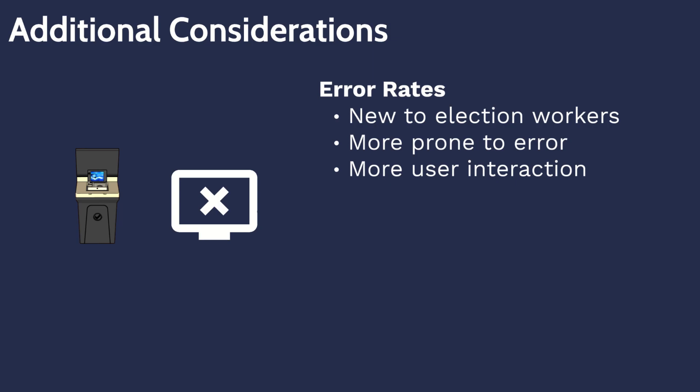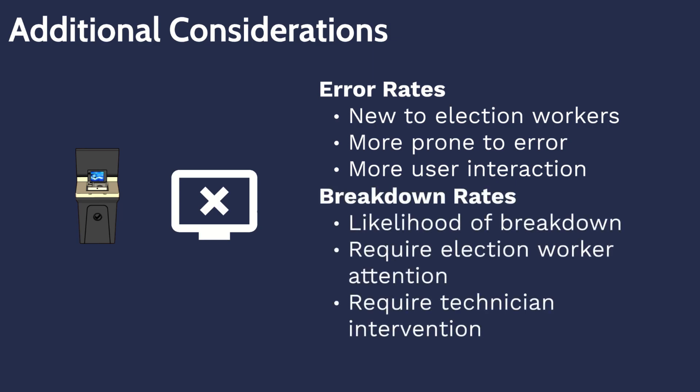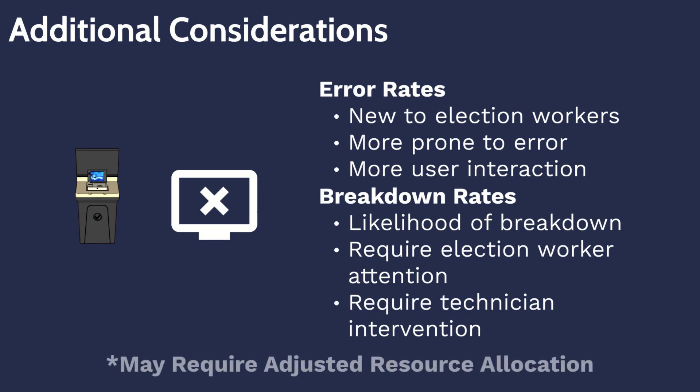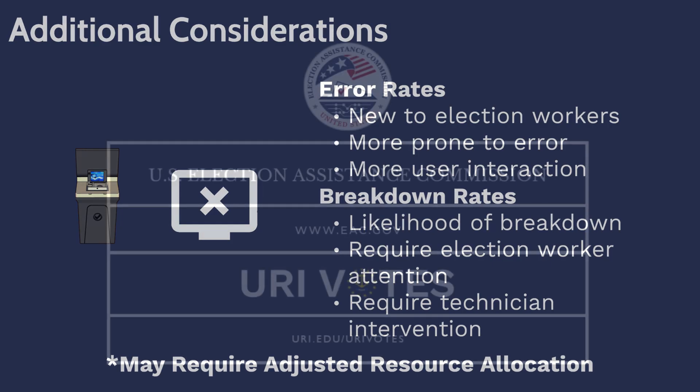Error rates may also increase when more user interaction is required to complete a voting process. Additionally, different voting equipment may have a higher or lower likelihood of breakdowns that require a poll worker's attention. Understanding the difference in breakdowns and error rates may require observations throughout multiple elections, but it is critical in determining how many devices should be allocated to each polling location. If breakdown rates are higher for a new device, or if breakdowns take longer to resolve, then more devices may be needed to ensure that voters do not face significant waits to vote.